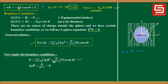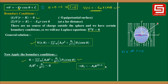The general solution is V(r,θ) = Σ (l=0 to ∞) [A_l r^l + B_l / r^(l+1)] P_l(cosθ). Now apply the boundary conditions. Applying the first condition V = 0 at r = R: since P_l(cosθ) is always non-zero (e.g., P₀ = 1, P₁ = cosθ), the bracket must be zero, giving B_l = −A_l R^(2l+1).